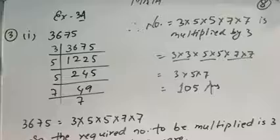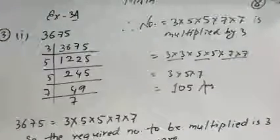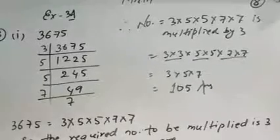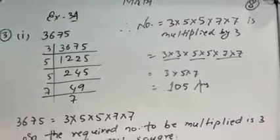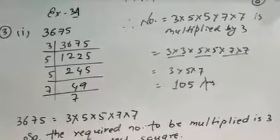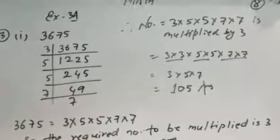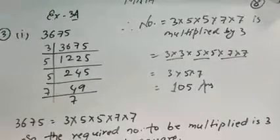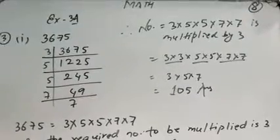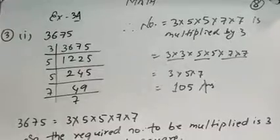In question number 3, the question is: by what least number should the given number be multiplied to get a perfect square number? In each case, find the number whose square is the new number. Question में कह रहा है कि जो given number है उसे किस number से multiply करें कि यह perfect square हो जाएगा, और perfect square होने पर किस number का यह perfect square होगा — यह दोनों ही चीज़ें पूछी जा रही हैं।